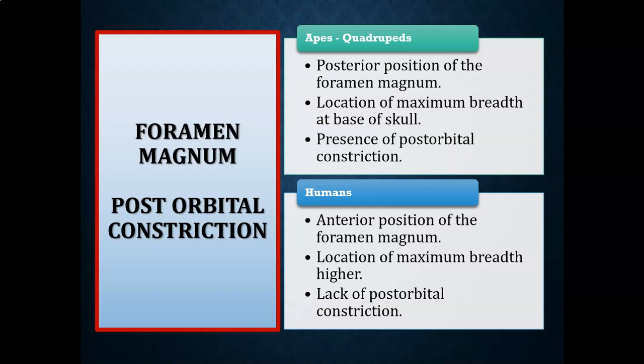Bipeds and hominins have a more anterior — directly underneath — position of the foramen magnum. The location of maximum skull breadth moves higher, especially into genus Homo and onward to Homo sapiens. Postorbital constriction decreases as cranial capacity expands, especially with expansion of the frontal region of the brain.